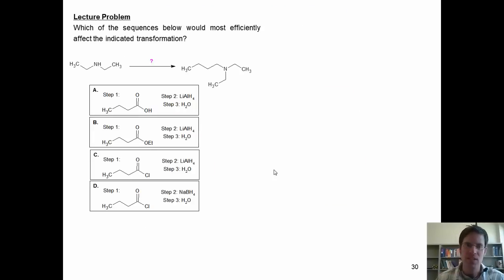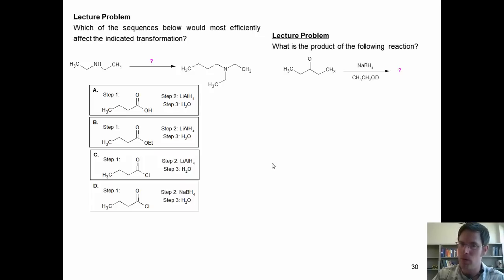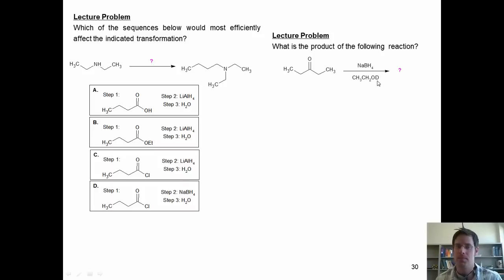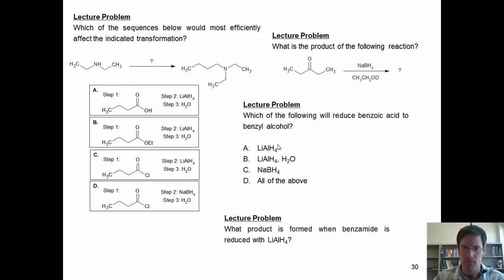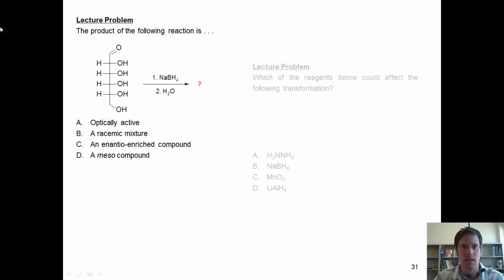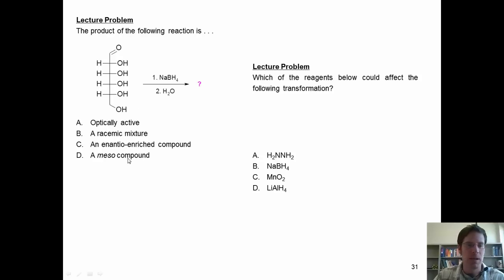Now we arrive at some questions. Which of the sequences below would most efficiently affect the indicated transformation? What is the product of the following reaction? Note that instead of being quenched with H-plus, it is quenched with D-plus—deuterium—so what would happen? Which of the following will reduce benzoic acid to benzyl alcohol? What product is formed when benzamide is reduced with lithium aluminum hydride? The product of the following reaction is: optically active, a racemic mixture, an enantioenriched compound, or a meso compound? And which reagents could affect the following transformation?